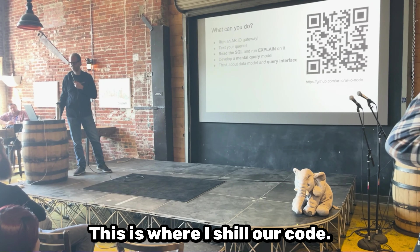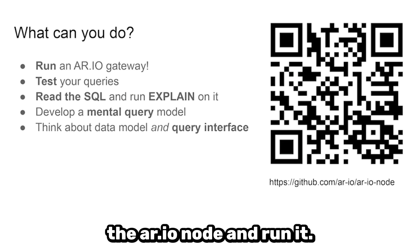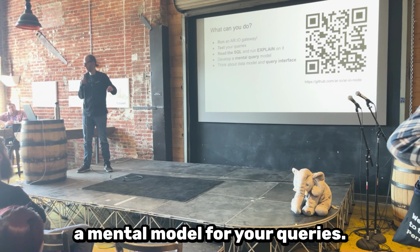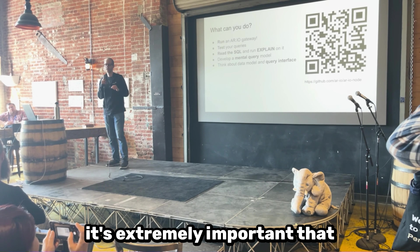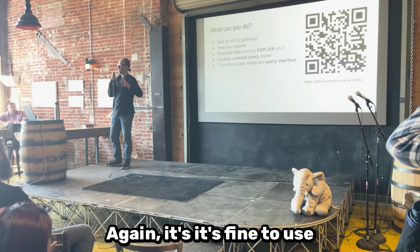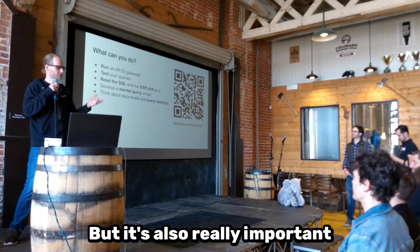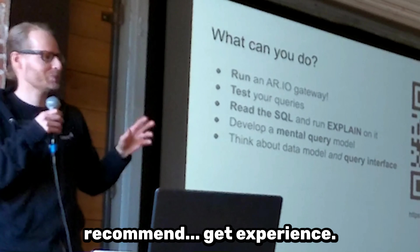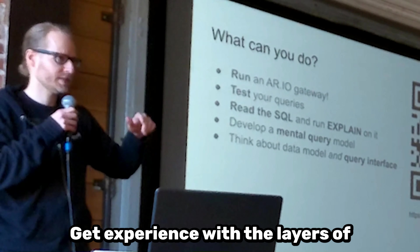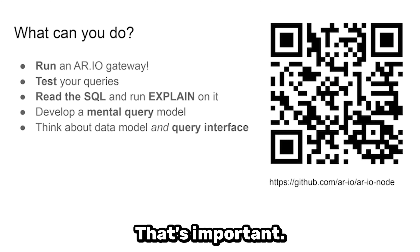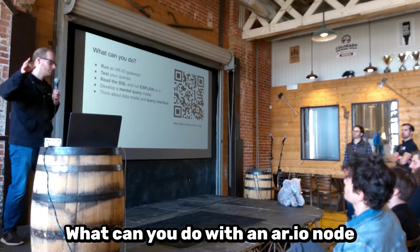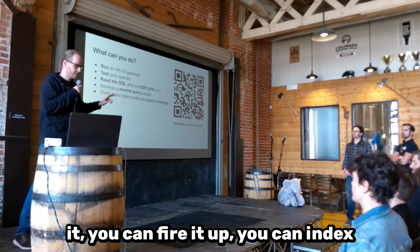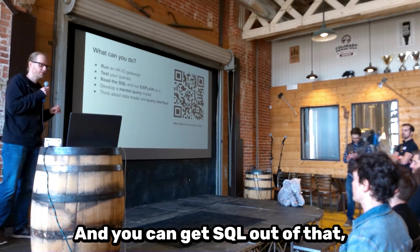So what can you do about this? There's a QR code — you can go there and grab the RIO node and run it. Before I get into talking about how you can use this to help understand and build a mental model for your queries, I also want to say it's extremely important that people have some agency over the infrastructure they're running on. It's fine to use things like rweave.net and whatever GQL endpoints you use, but if you're building a business, it's really important to be able to run things yourself.